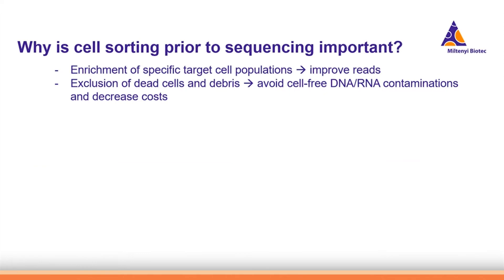Let's first discuss why cell sorting is so important prior to sequencing. First, we want to enrich our specific target cell populations and improve the reads. Second, we want to exclude dead cells and debris in order to avoid cell-free DNA and RNA contaminations and decrease the costs.